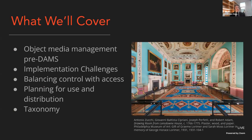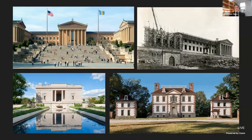Today we'll discuss what our pre-DAM environment looked like, the challenges we faced in moving object media from a collection management system into DAM, how we balance control and access as we turn metadata into actionable human-readable permissions for use and distribution, and how we folded legal review, staff training, communication, and a holistic taxonomy into the implementation. Established in 1876, the Philadelphia Museum of Art is one of the country's oldest art museums, with a collection of more than a quarter million objects spanning eight curatorial departments and five buildings.